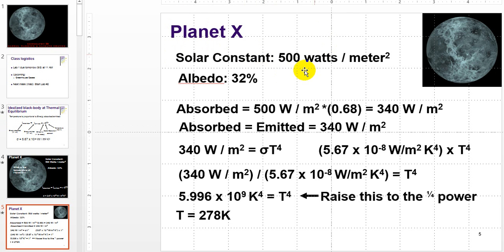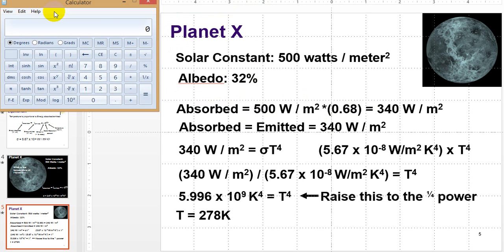The solar constant is the incoming energy from the sun. For our particular situation, this is given as 500 watts per meter squared, which depends on the output of the sun and the distance of the planet from the sun. The albedo is also given as 32%. Since that's the amount that gets reflected, 100 minus the albedo gives you the remaining that gets absorbed, which in this case is 68%. So we would do 500 times 0.68 to get to 340. I'm going to bring out the calculator and do this.